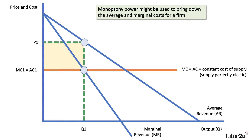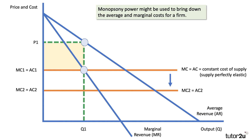Here's a strong analysis diagram you can use. The initial profit-maximizing output is Q1, with price P1 charged per unit. The profit is shown by the yellow shaded area. Monopsony power might be used to help bring down the average and marginal costs for a firm — essentially using that bargaining power to lower the cost of supply. I've now shifted the cost curve down from MC1 to MC2.